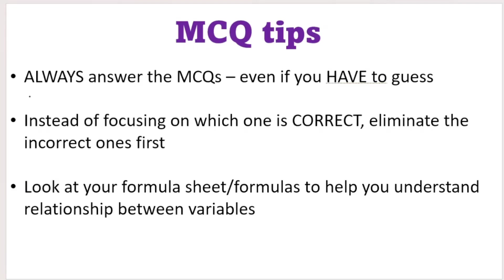My second tip, which I kind of touched on in the first tip, is instead of focusing on which one is correct, eliminate the incorrect ones first. This is especially true if you have no idea what's going on. Usually out of the four options given, there will be one, sometimes two, that is absolutely incorrect. That narrows down your choices and if you have to guess, it increases your odds of getting the correct one.